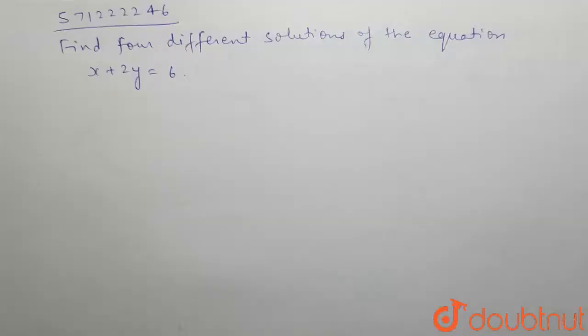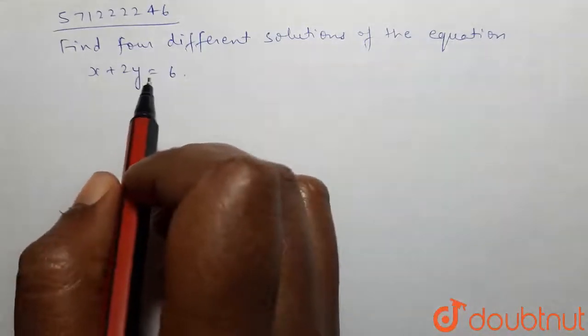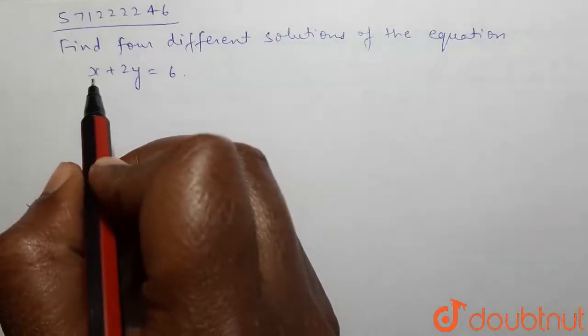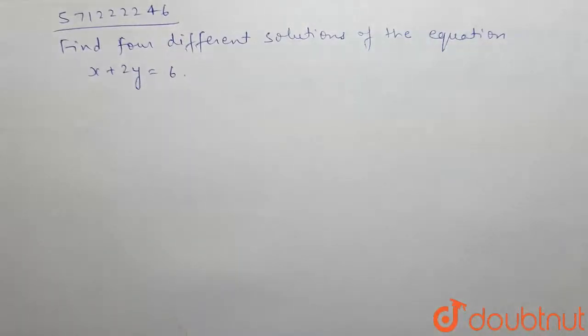Hello friends, so the question is find four different solutions of the equation x plus 2y equals to 6. We are given a linear equation in two variables x and y, and we have to find four different solutions of this equation.